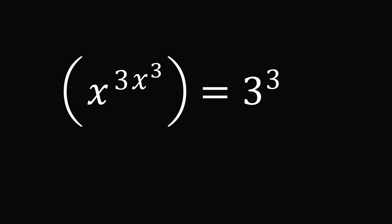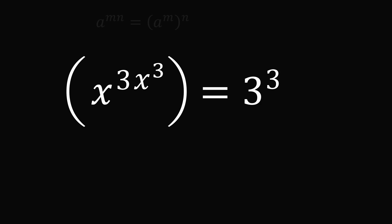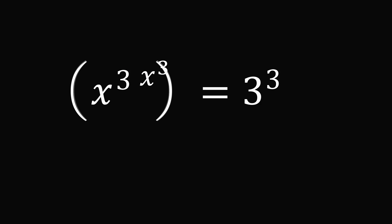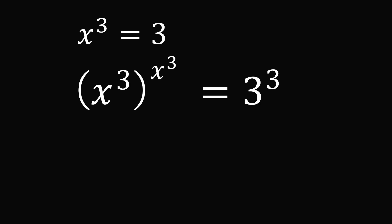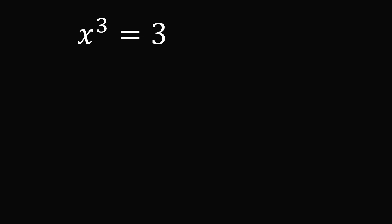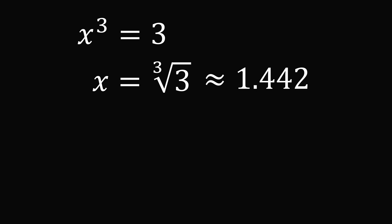Let's get rid of the parentheses in the exponent, and now use the same rule in reverse: a to the power of m·n is equal to a to the power of m raised to the power of n. Take m to be 3 and n to be x cubed. So we have x cubed to the power of x cubed is equal to 3 to the power of 3. This means x cubed equals 3 and x cubed equals 3, so it must be the case that x cubed equals 3. Taking the cube root, x is equal to the cube root of 3, which is approximately 1.442.